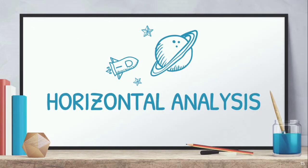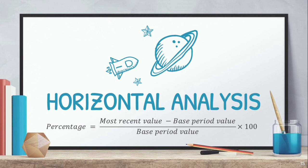Next, we have horizontal analysis. The formula is: Percentage = (Most Recent Value − Base Period Value) / Base Period Value × 100. Horizontal analysis is the process of comparing figures of financial statements for two or more consecutive periods. Unlike vertical analysis, which uses one financial statement for one period, horizontal analysis uses two or more periods — and they must be consecutive.